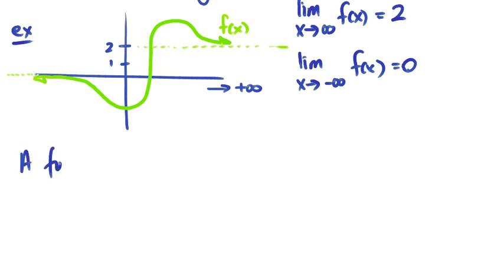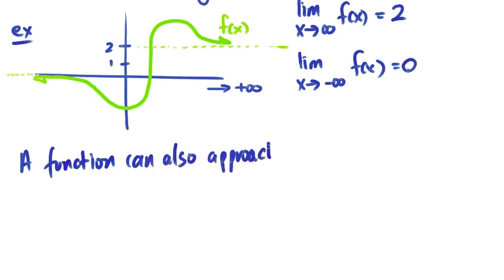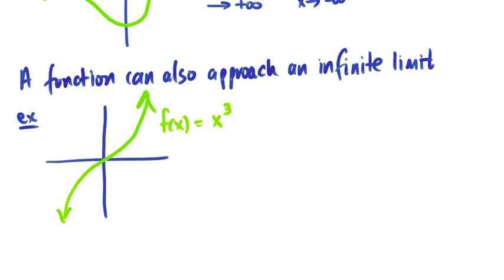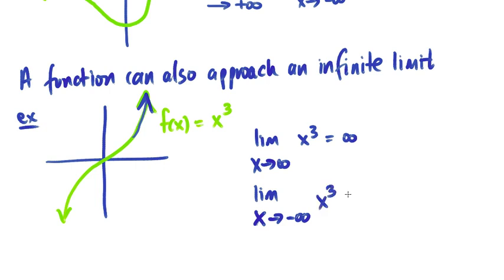A function can also approach an infinite limit. For example, if you have the function f(x) = x³, as x approaches infinity the values get bigger and bigger, and as you approach negative infinity of the same function, the values get smaller and smaller.